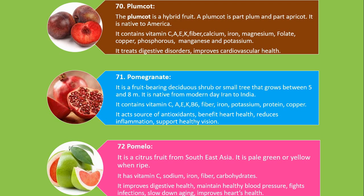Number 72. Pomelo. It is a citrus fruit from Southeast Asia. It is pale green or yellow when ripe. It has vitamin C, sodium, iron, fiber and carbohydrates. It improves digestive health, maintains healthy blood pressure, fights infections, slows down aging, and improves heart health.